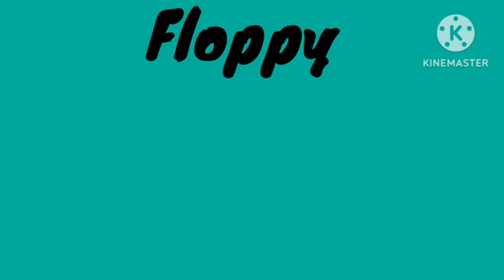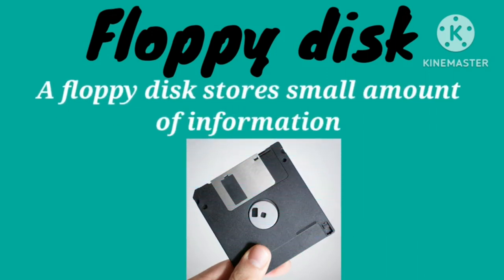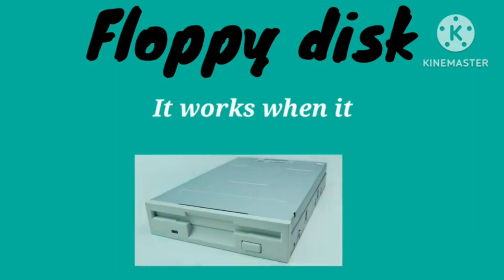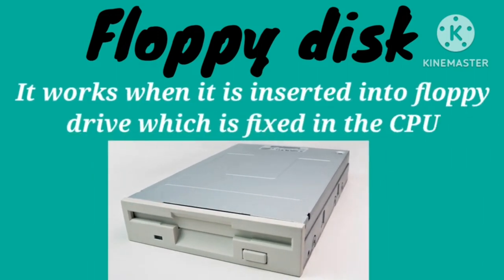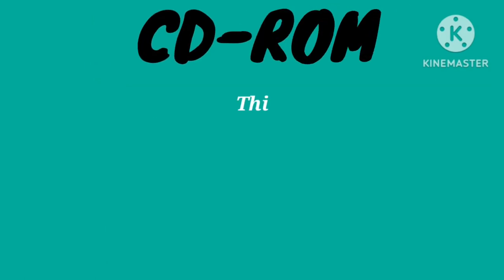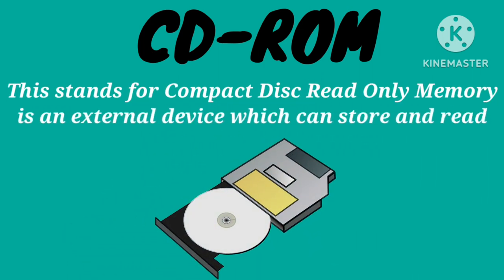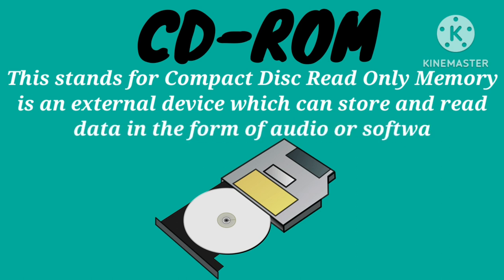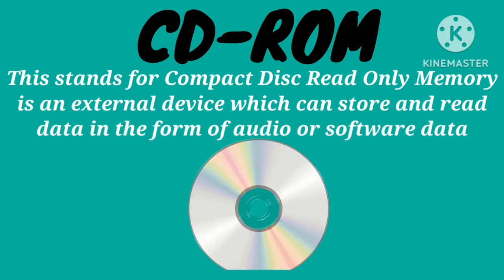Floppy disk: a floppy disk stores a small amount of information. It works when it is inserted into a floppy drive which is fixed in the CPU. CD-ROM: this stands for compact disk read-only memory. It is an external device which can store a large amount of information to store and read data in the form of audio or software data.